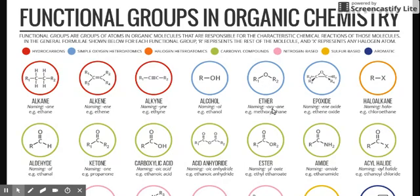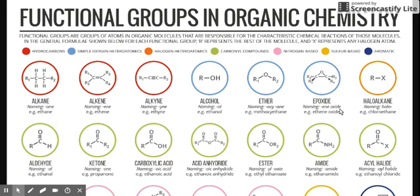Ether ends in O-X-Y and then A-N-E. Because O is between two groups, you name the group on the left ending in O-X-Y and the group on the right ending in A-N-E. For example, methoxyethane — methoxy because the one on the left is methyl, and ethane because the right side is your ethyl group. Next is epoxide, a cyclic structure in which O is within that cyclic structure, between two carbons. The name ends in the word oxide — so in-oxide means you get an epoxide.